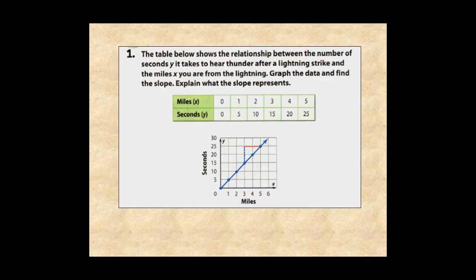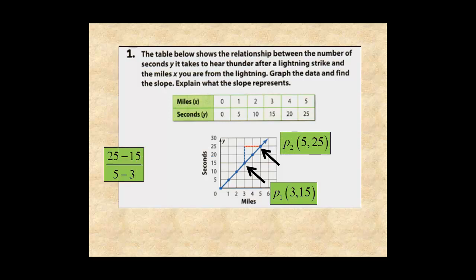For example, when two points are selected, point 1 is 3,15, and point 2 is 5,25. So the slope of the line is 25 minus 15 over 5 minus 3, which is 10 over 2 for a slope of 5.